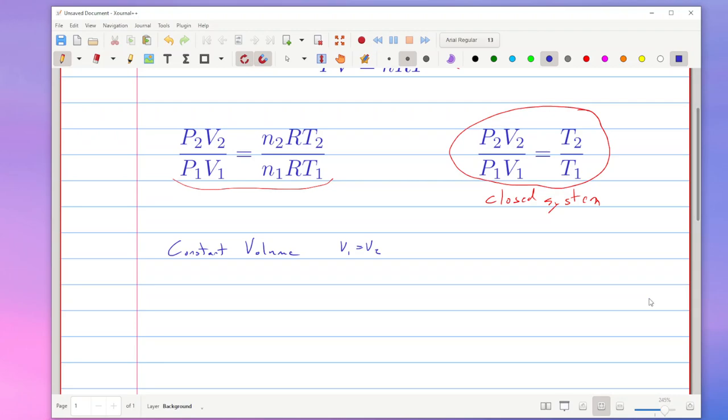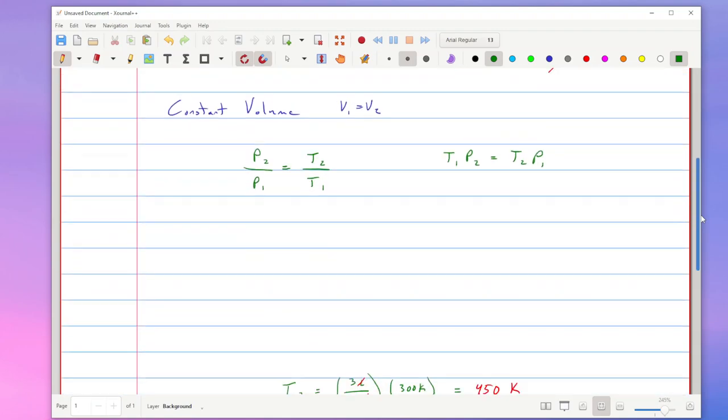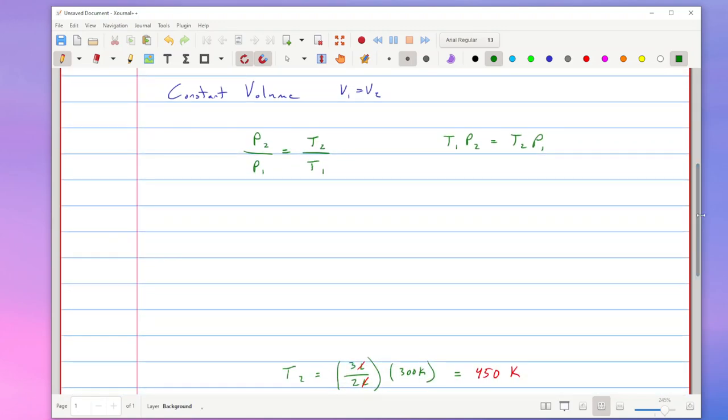Well in that case my equation is going to simplify down to P2 over P1 is equal to T2 over T1. And again you can cross multiply that up and then we could solve for any one of the individual values.